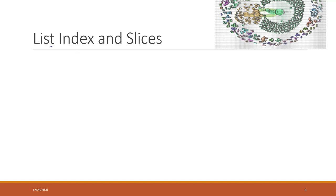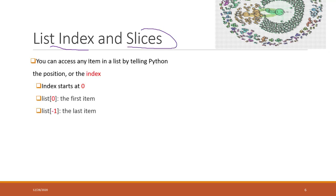Let's continue about the list index. We just saw an example and also what slices mean. You can access items in the list by telling Python the position of that item, or sometimes we call it the index.